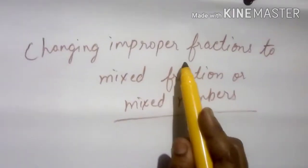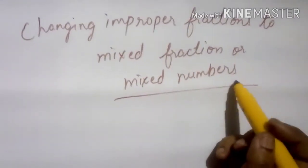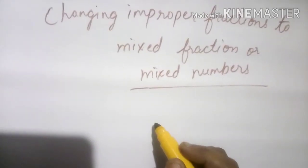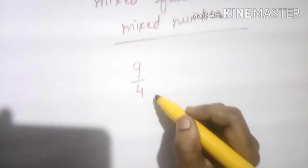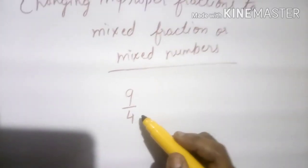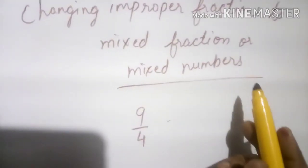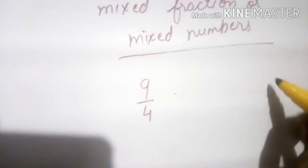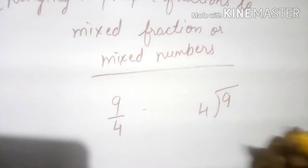Changing improper fractions to mixed fractions, or mixed numbers. Let us take one example: 9 by 4. 9 by 4 is an improper fraction. We have to convert this into a mixed fraction. To do that, you divide the numerator — that is 9 — by the denominator — that is 4.